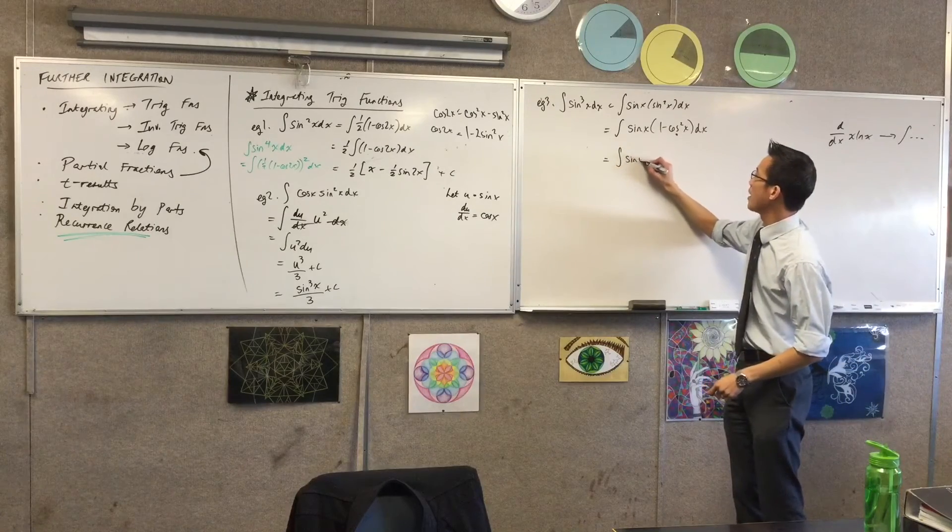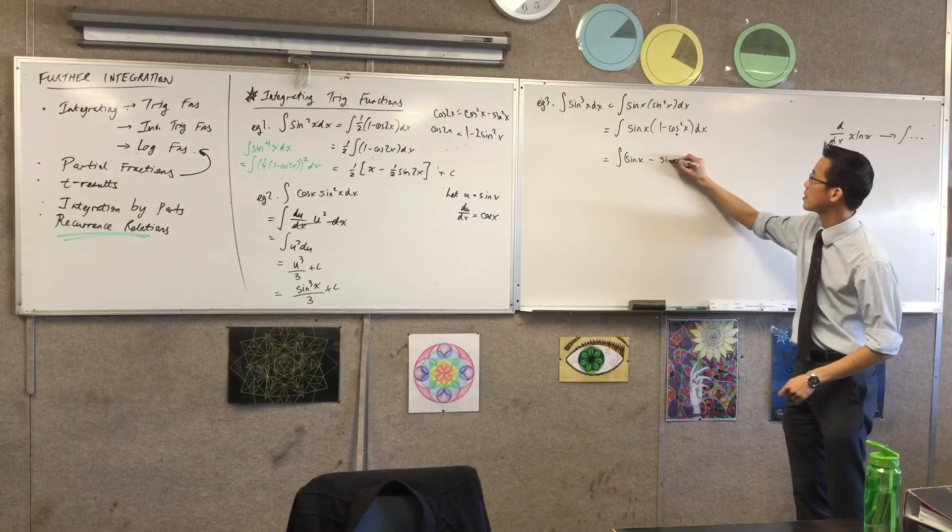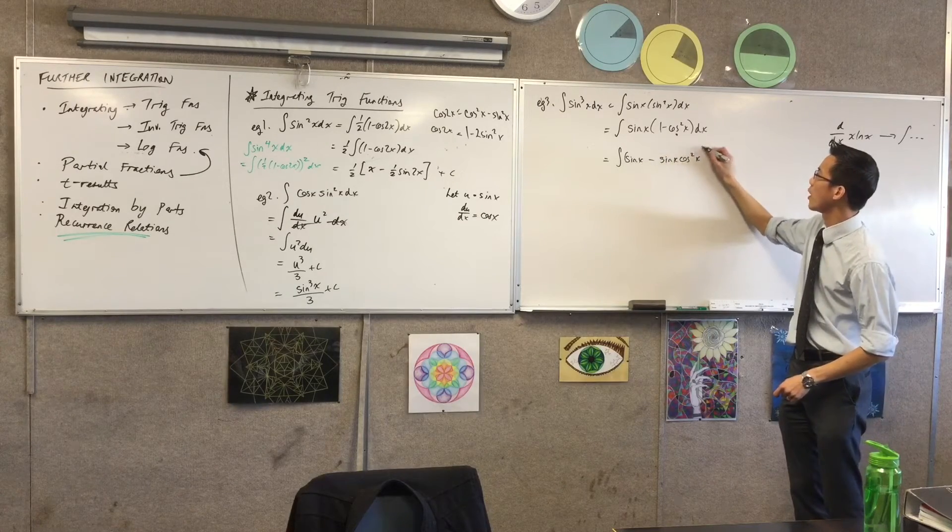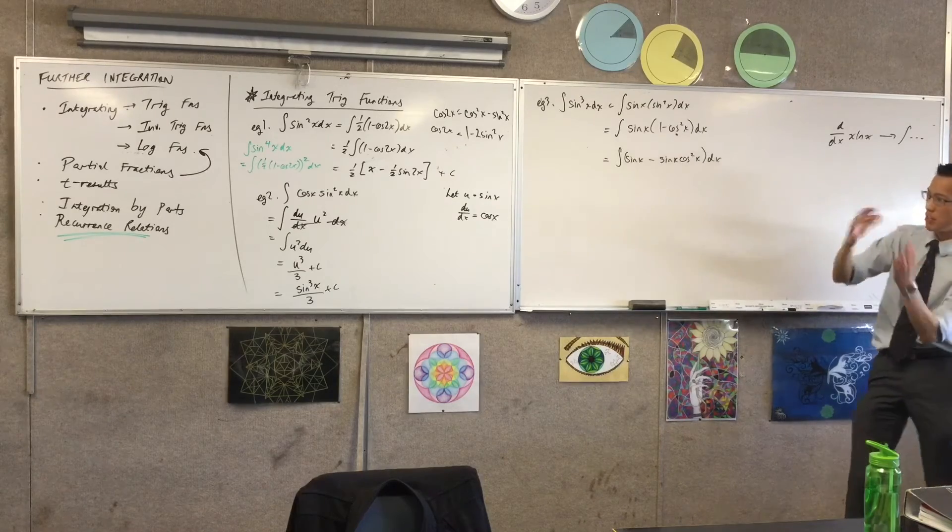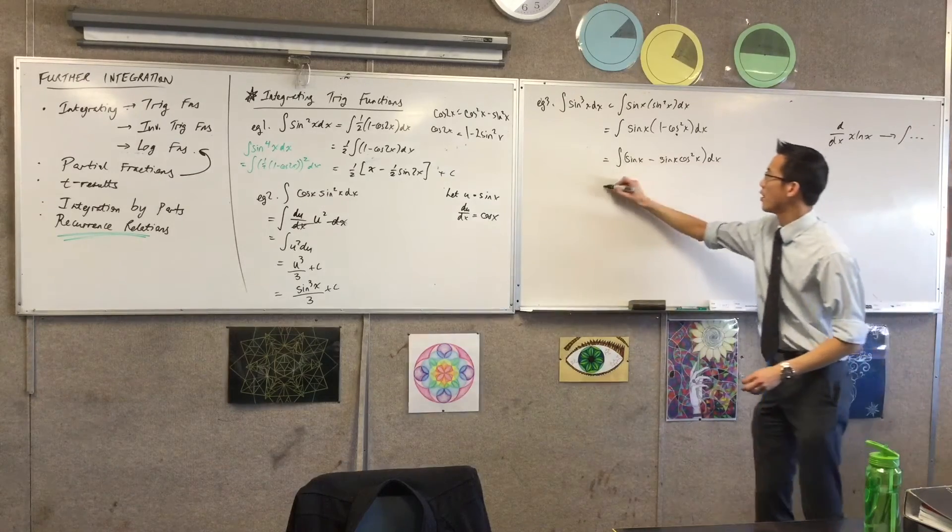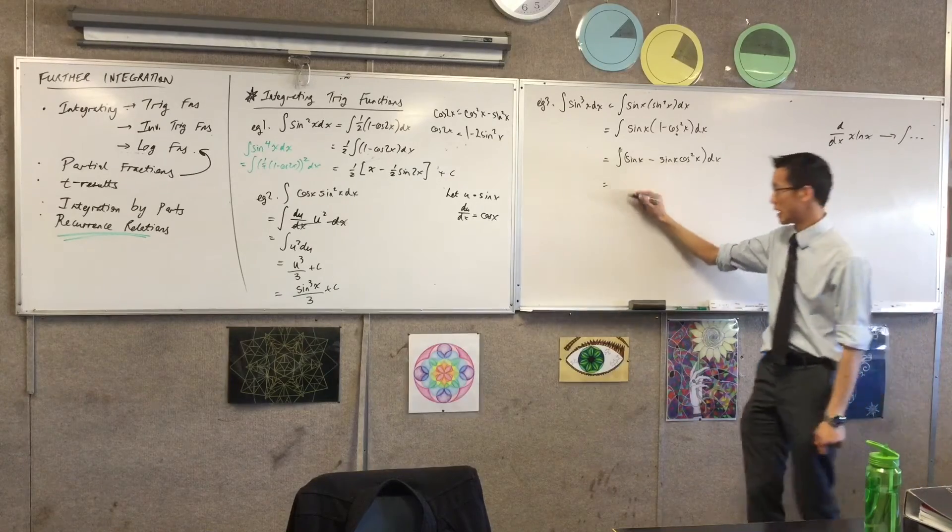I'm integrating now, sine x, take away, sine x cos squared x. But this looks just like my second example, does it not? I mean, it's slightly stitched around. Okay, so I'm going to integrate, what am I going to get from sine x? Negative cos x.